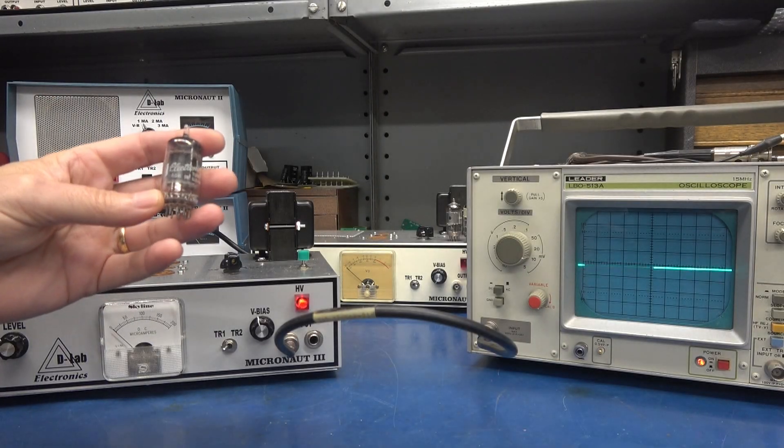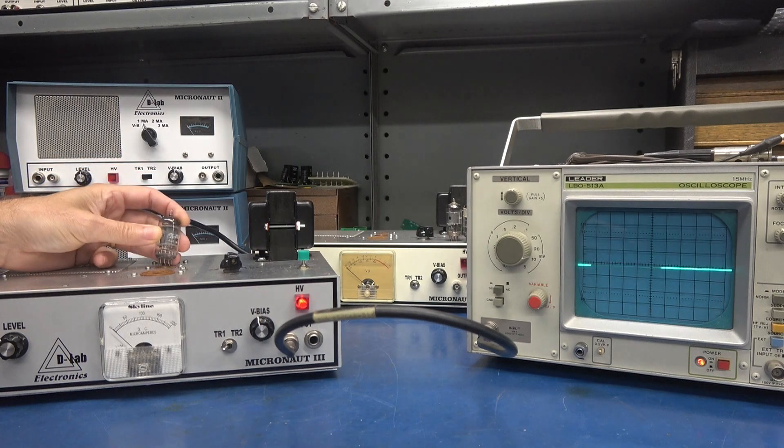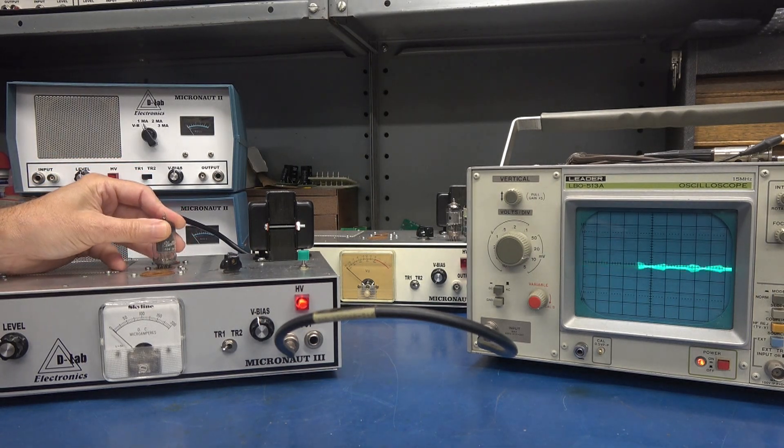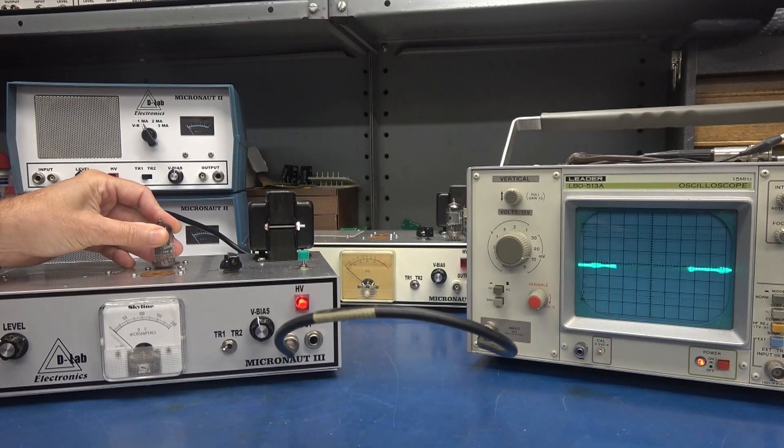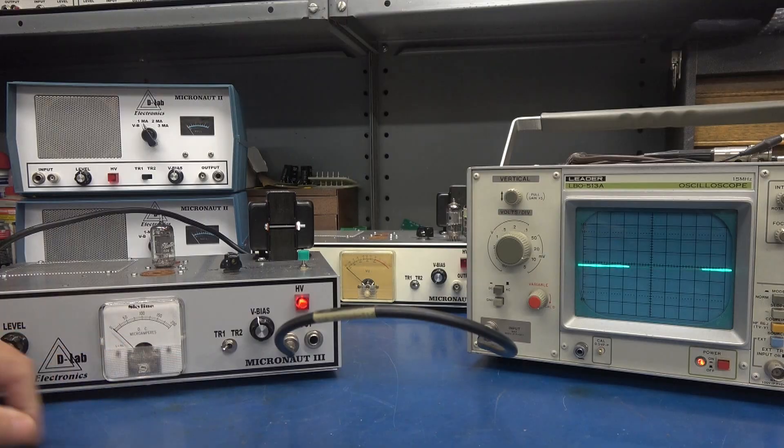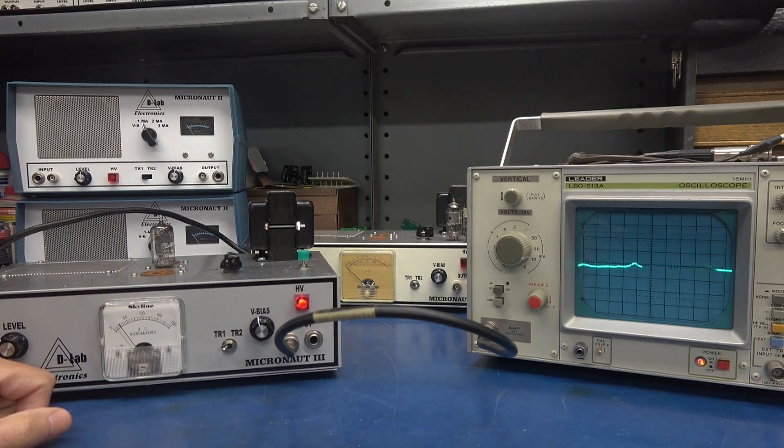Now I've got this old GE tube. This one was reported as weak and noisy. So let's see what we get. So I'm on triode one. You can see the cathode current coming up. Should be somewhere mid-scale.